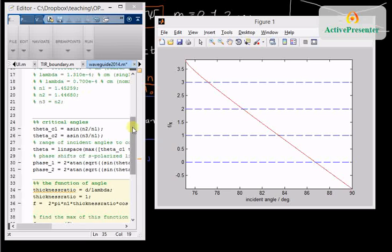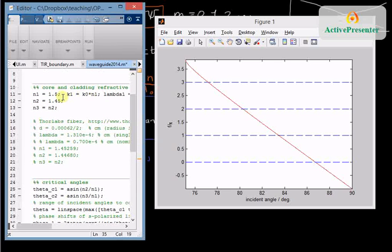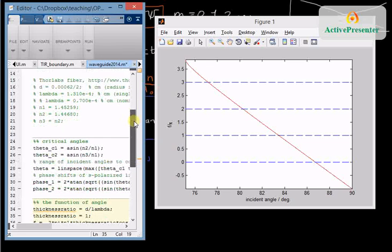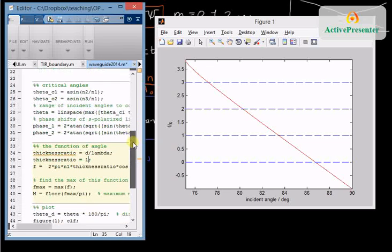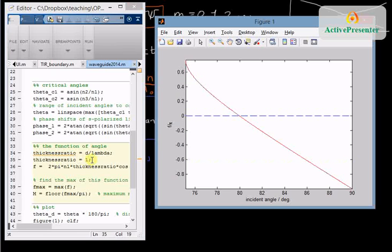Another way to reduce the number of modes is to set the refractive index back to 1.45 in the outer regions, but to change my thickness ratio from 5 down to 1, make it a thinner waveguide. Now when I run the simulation, I again only get a single mode propagating.